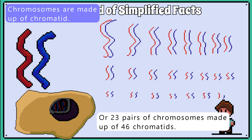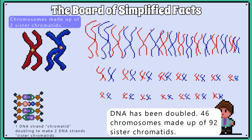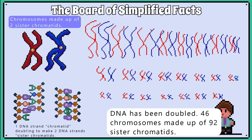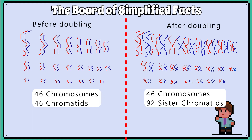In reality, the DNA is already being doubled while still in chromatin form, but this is easier to visualise. So now we will double the DNA, and we get chromosomes made up of two sister chromatids — they're exactly the same, doubled and duplicated and copied. So 46 chromosomes can be made up of 46 chromatids, or after doubling, we can have 46 chromosomes but now made up of 92 chromatids.